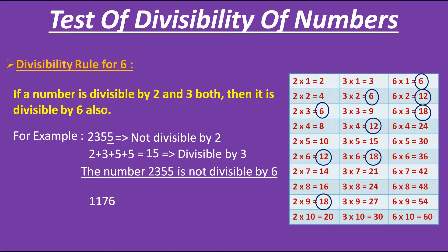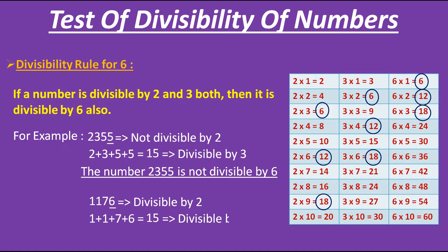Now let's check the second number. Here the second number has 6 on its unit place, so it is an even number and therefore divisible by 2. For 3, we add the digits: 1 + 1 + 7 + 6 gives us 15, which is a multiple of 3, and therefore it is divisible by 3 also. Therefore, the number 1176 is divisible by 6.